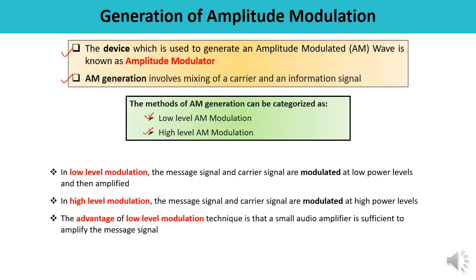Low-level modulation has the advantage that a small audio amplifier is sufficient to amplify the message signal. For high-level modulation, it is a process of amplitude modulating at the final power amplifier stage of a transmitter.